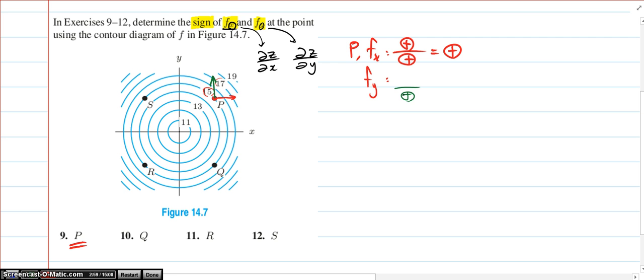So when y is moving up, which means the bottom, ∂y, is positive, the z value is going up from 15 to 17 to 19, so it's also positive. So both fx and fy in point P are both positive.